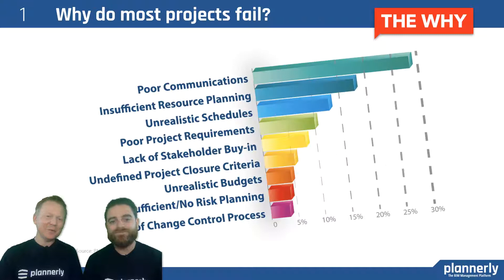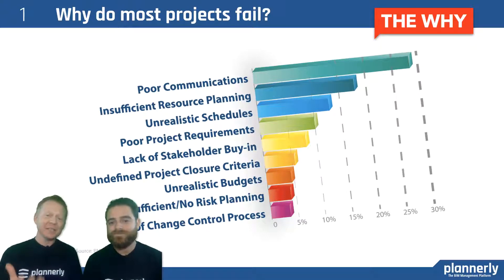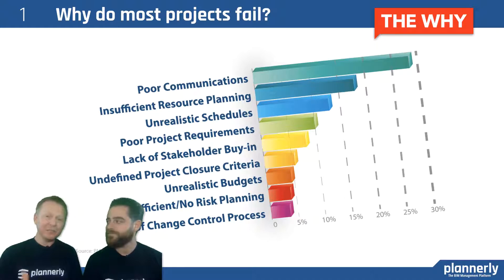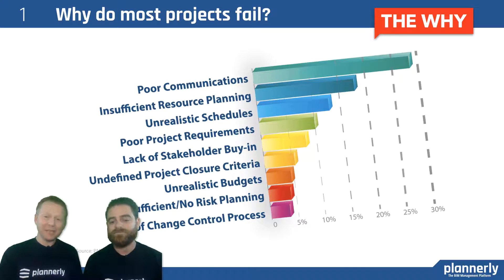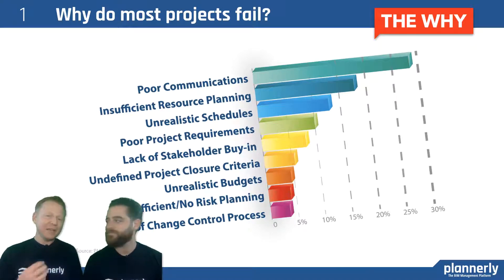We see some statistics here from PMI. They say that mostly the reason for failure on a project is poor communication, insufficient resource planning, and unrealistic expectations. Those are the top three, and they're all related to things that we can plan for.